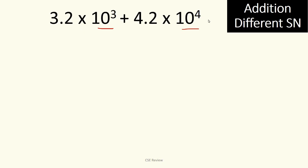So, paano pag different ang scientific notation? For example, ito 10 raised to 3, ito 10 raised to 4. The other option is for you to convert them. For example, 3.2 raised to 3, so 1, 2, 3, that is going to give you 3,200. And 4.2 times 10 to the fourth, which is going to give you 42,000. So you can do 42,000 plus 3,200. That is another option that you can do.